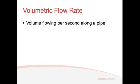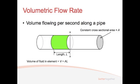First off we'll start with volumetric flow rate. Volumetric flow rate is essentially the volume of flow per second along a pipe. So we've got a pipe that has a cross-sectional area of A, and inside this pipe we've got an element of fluid. This element of fluid has a length of L, and so the volume of the fluid inside that element is obviously going to be A times L.